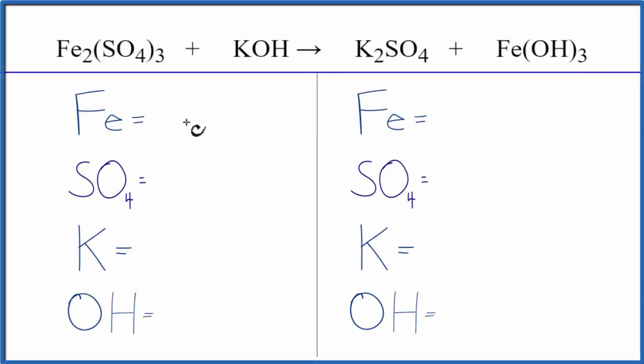In this double displacement reaction we have iron 3 sulfate plus potassium hydroxide, and the iron and the potassium pretty much change places. Let's count the atoms up on each side of the equation. We'll use a trick to make this a lot easier, and this trick works on most double displacement reactions.